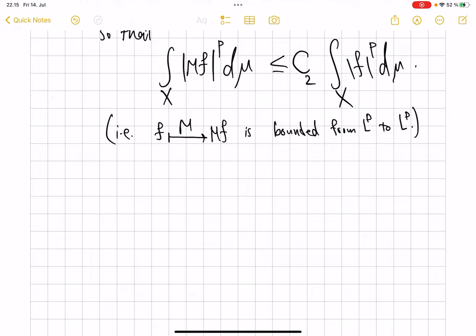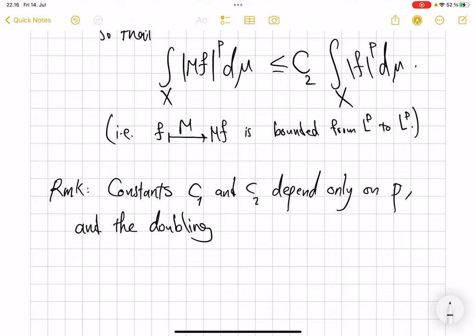And finally, the remark is that these constants c1 and c2 depend only on p and the doubling constant, the one which makes measure of 2 times ball bounded by cd times measure of b. This constant is the doubling constant.